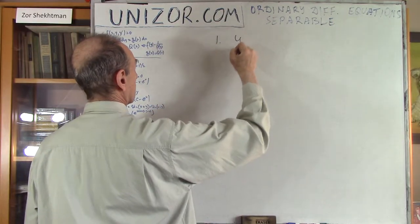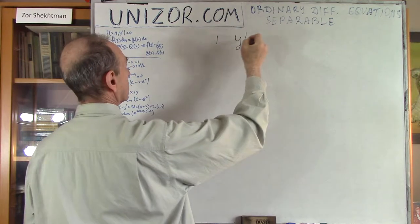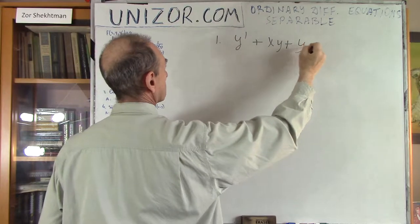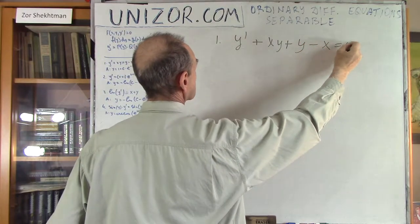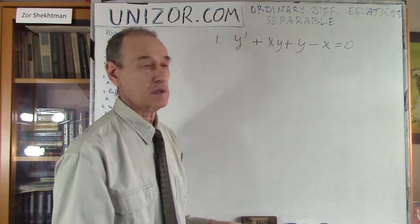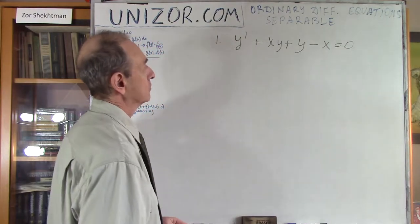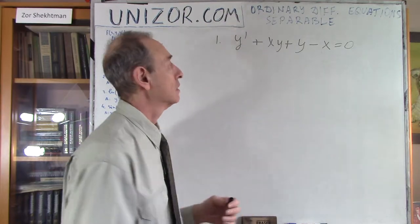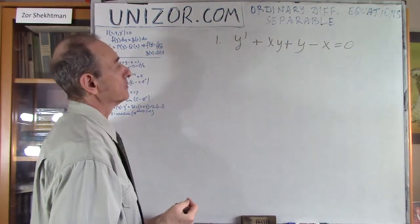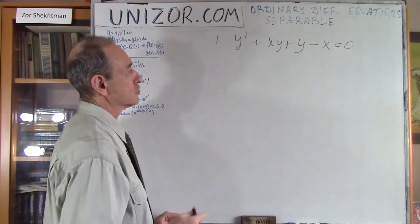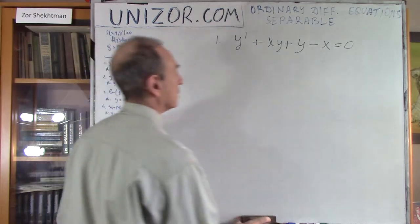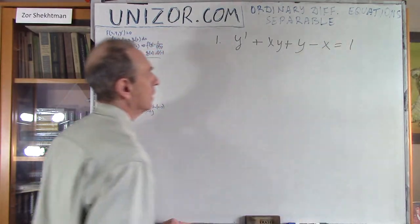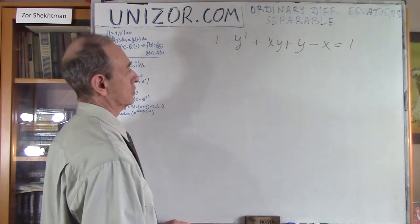First example: y' + xy + y - x = 1, where y is a function of x. Now, it doesn't look immediately like a separable equation. But you can actually do some manipulation with it. What kind of manipulation? Well, let's see.